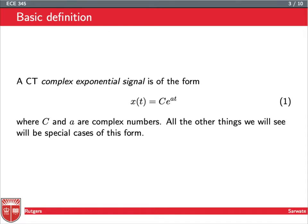So what is a complex exponential? It's just a signal which is constant times e to the at. But the tricky part is that both C and A can be complex numbers. And basically, all the other signals we're going to see is a special case, whether C is real or A is real, or so on and so forth. We can kind of come back, and this is the generic form.